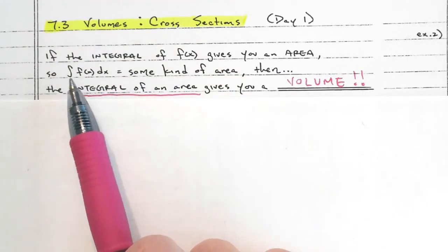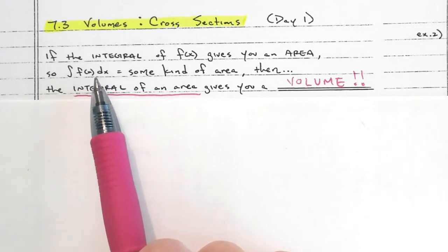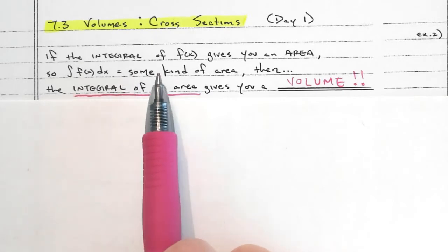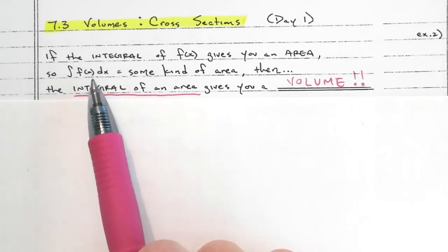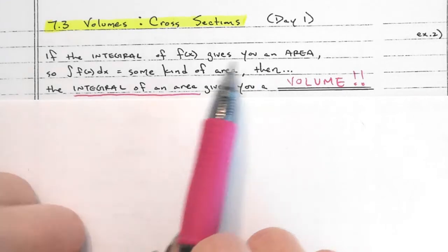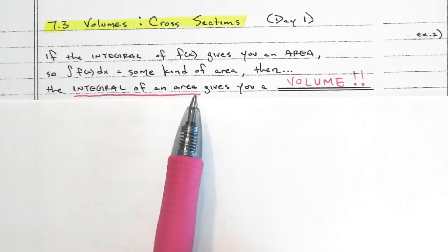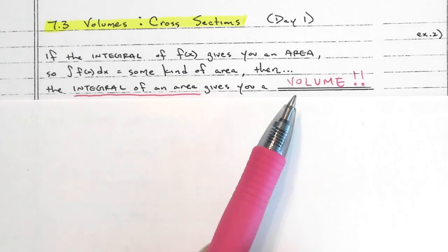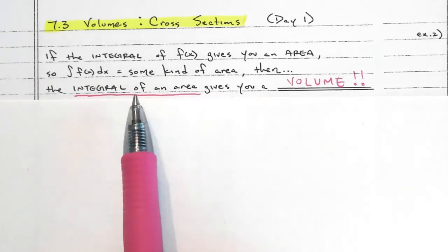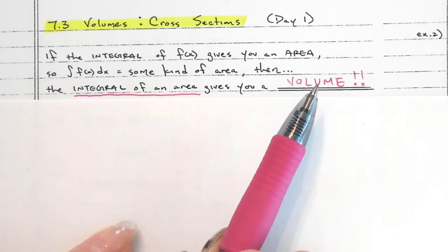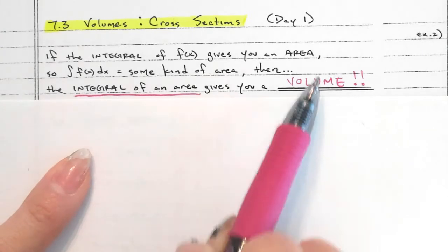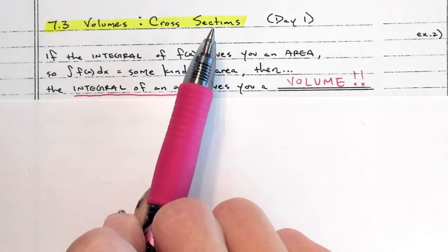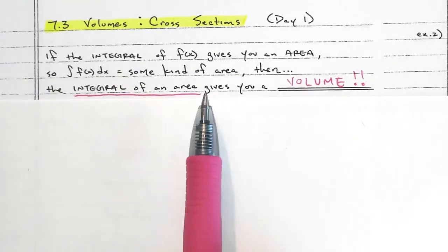When you take the antiderivative of x, you get one-half x squared — the x becomes an x squared. If you take the antiderivative of an area, which is x squared, you will get an x cubed. Antiderivative: you go up one for your power. So that's why when you take the integral of an area, it actually gives you a volume. We're going to find volumes of cross-sections using integrals of areas.